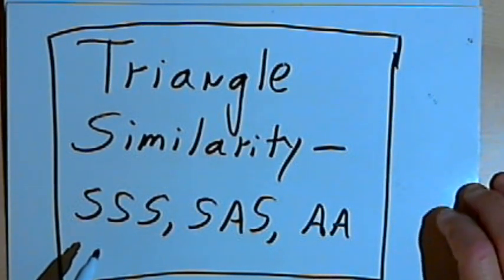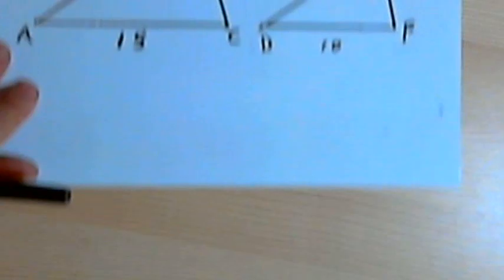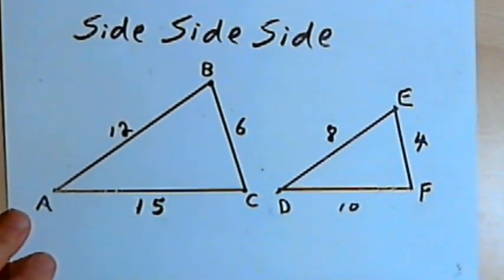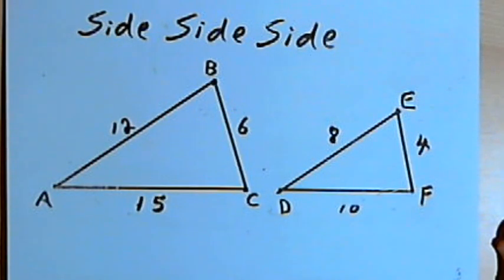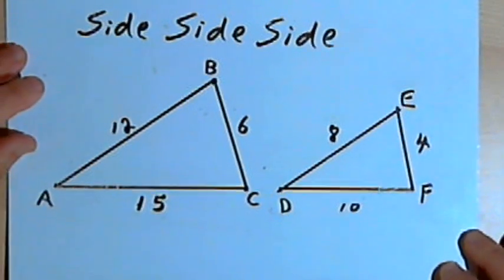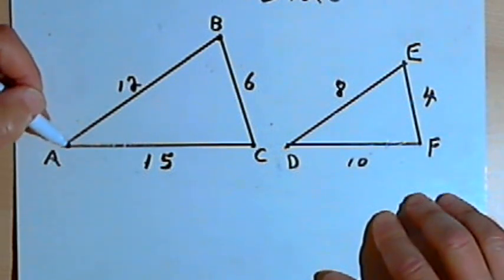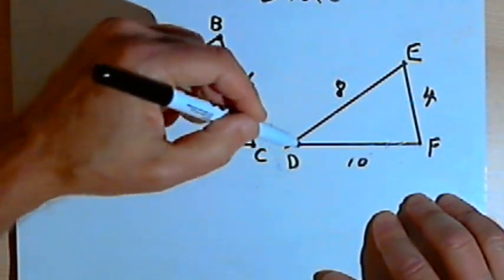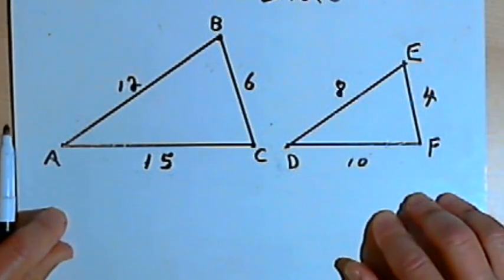Let's start with side-side-side. With side-side-side similarity, we can say that two triangles are similar if the lengths of their corresponding sides are proportional. I've got two triangles here, triangle ABC and triangle DEF, and I want to see if they're similar.